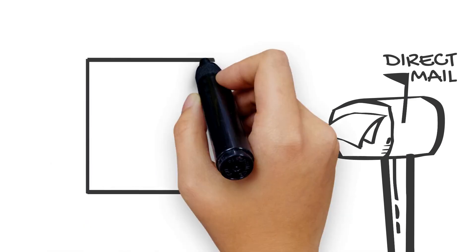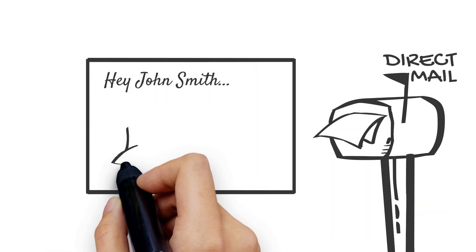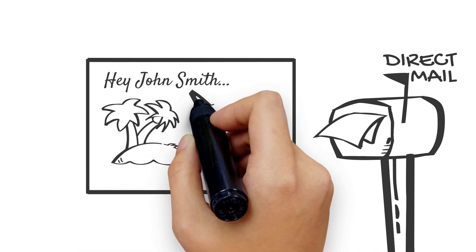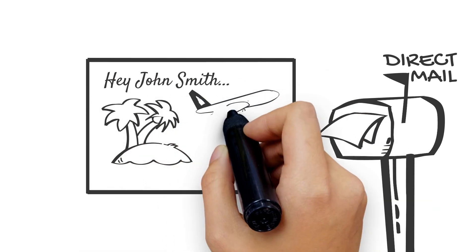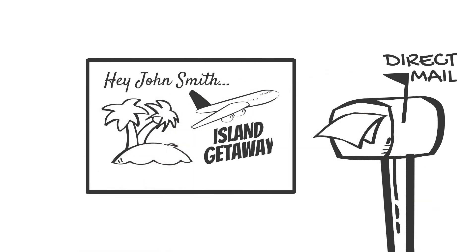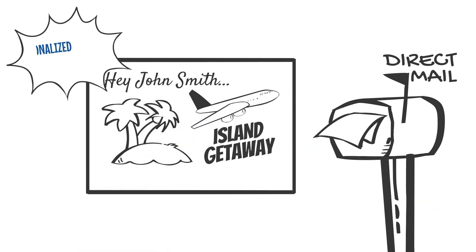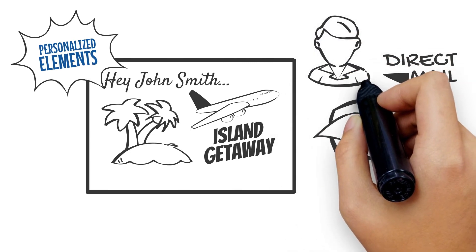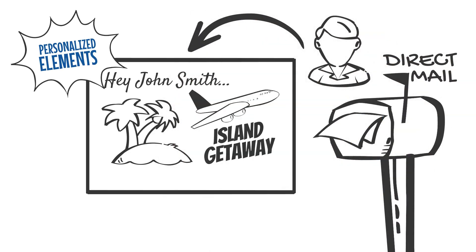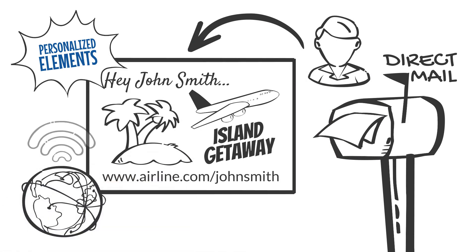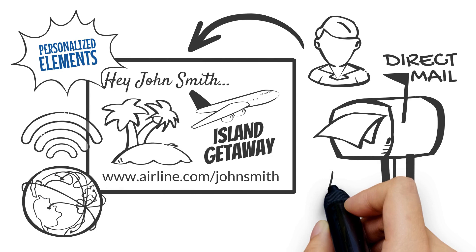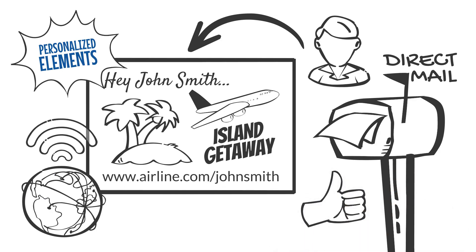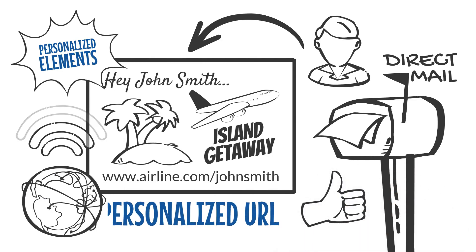one sent to members of an airline frequent flyer program. The airline creates a postcard inviting its members to take advantage of a new offer. The postcard includes personalized elements such as the recipient's name. The airline also includes a URL — a link to a page online — but this is a special URL. It's unique for each recipient.